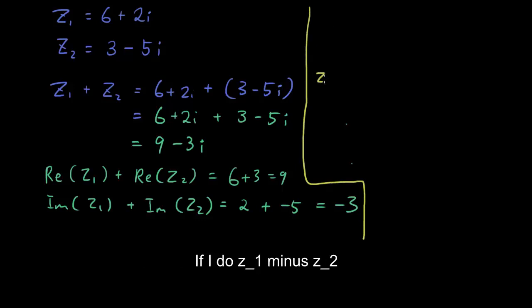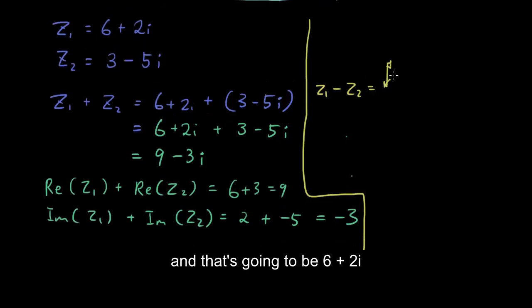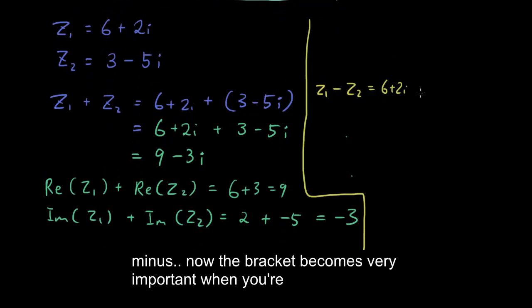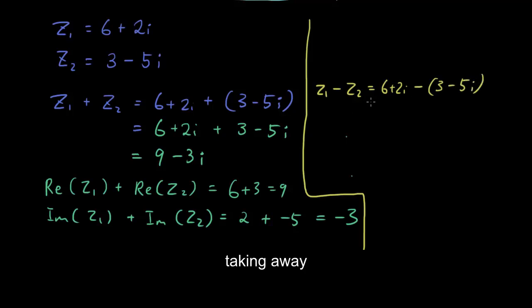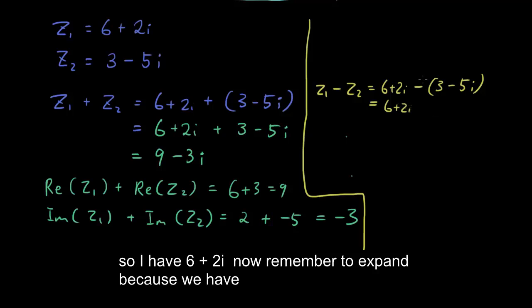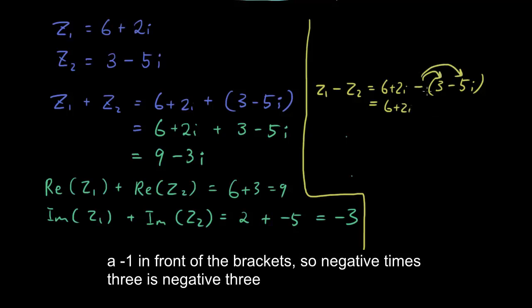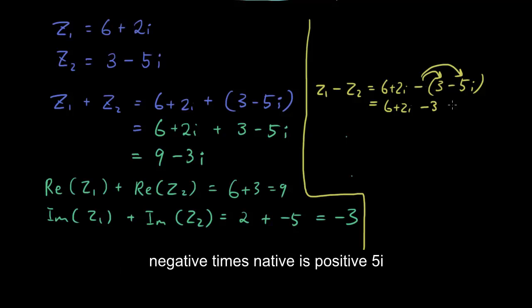If I do z1 minus z2, and that's going to be 6 plus 2i minus, now the bracket becomes very important when you're taking away. So I have 6 plus 2i. Now remember to expand because we have a negative 1 in front of the bracket. So negative times 3 is negative 3. Negative times negative is positive 5i.